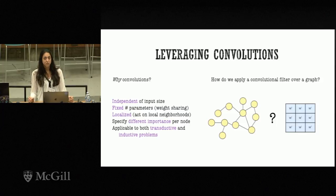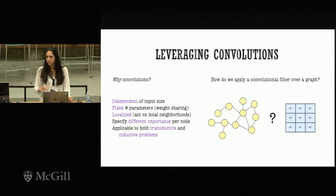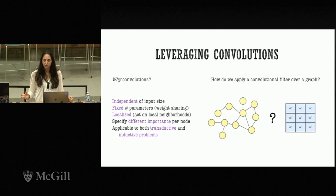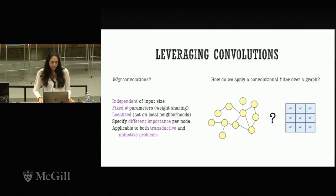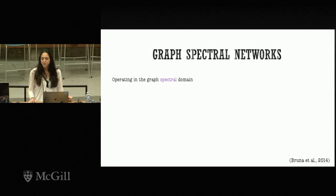The question is: how do we apply a convolutional filter to a graph? There are challenges: it is not straightforward how to slide the convolutional kernel across all graph positions, and each node may have a different number of neighbors.